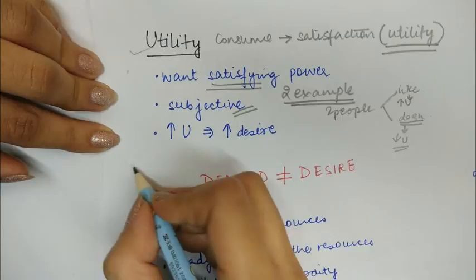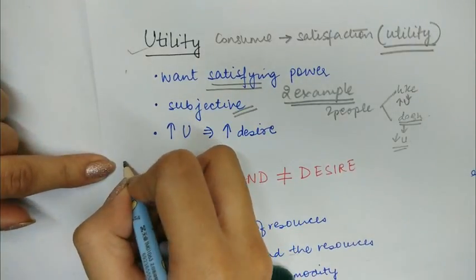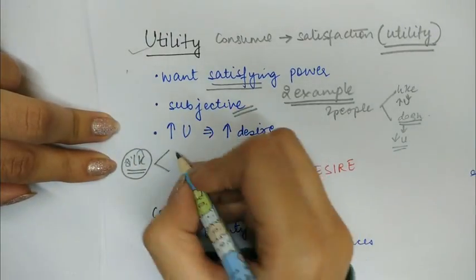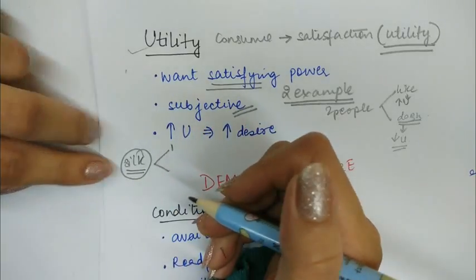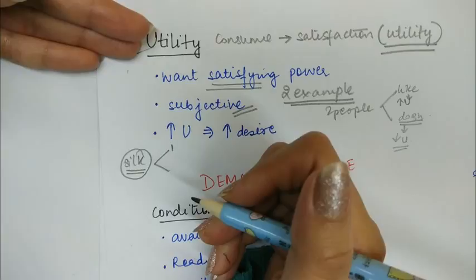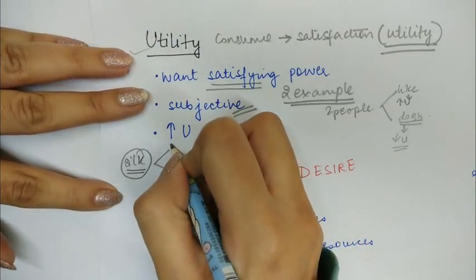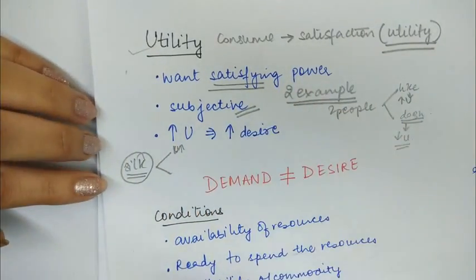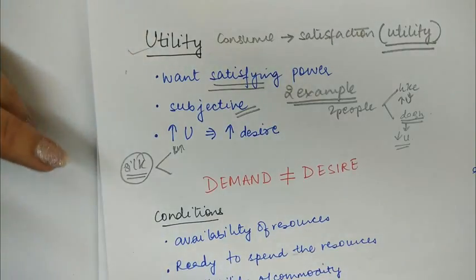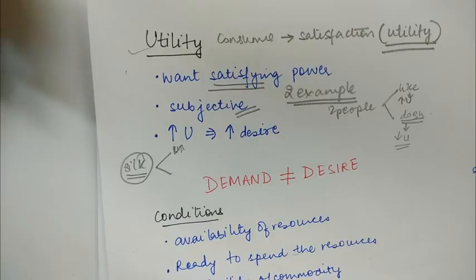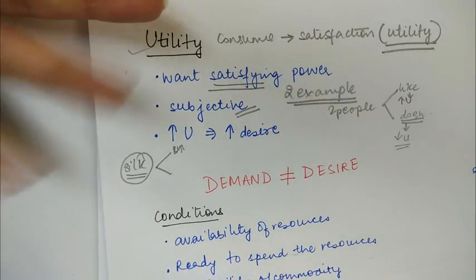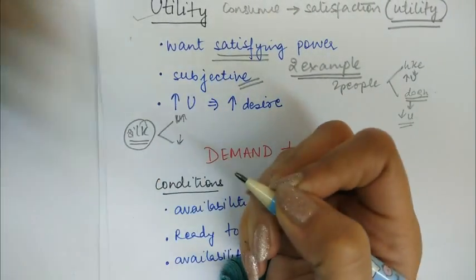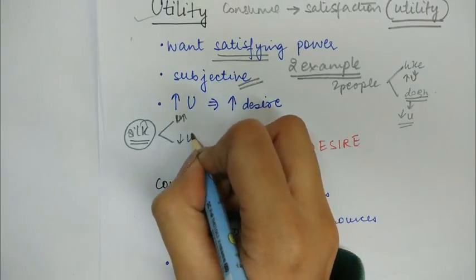Consider the same commodity — say Cadbury Dairy Milk Silk — in two situations. If this is the first chocolate offered to a person who likes chocolate, the utility from the first bite will be very high. But if that same person has already consumed four or five silks and is offered another, the utility derived will be low.